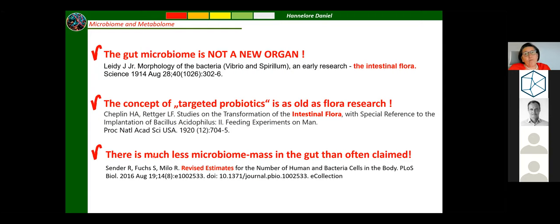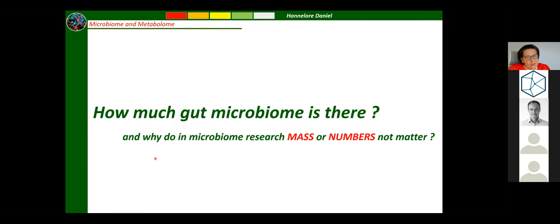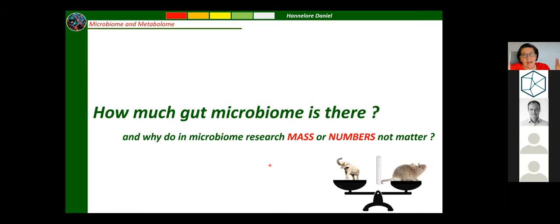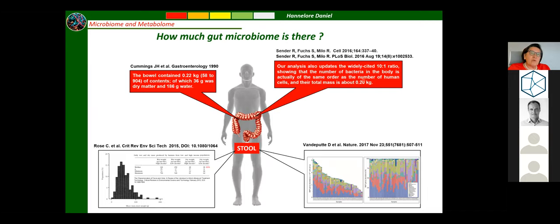Another myth is that we have 1.5 to 2 kilograms of biomass residing in the human large intestine. That has clearly been shown to be wrong. There is much less than thought and quite frequently reported. The question is, is the gut microbiome as heavy as an elephant or as heavy as a mouse? Wonderful studies by Sender and Milo in Cell and PLOS Biology concluded that those numbers — 1.5 to 2 kilos — go back to one paper by Luckey in the American Journal of Clinical Nutrition, published in 1972, cited repeatedly, but wrong.